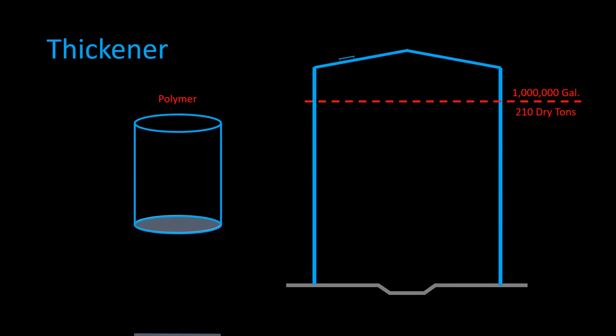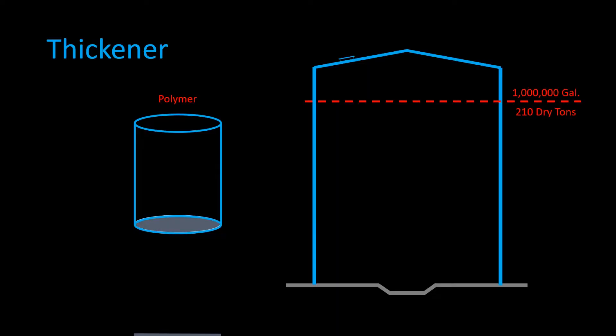To see this problem visually, let's say we are using a thickener to fill up a digester that has a capacity of 1 million gallons. One million gallons at just over 5% solids is about 210 tons of dry solids. So let's use our traditional method to calculate how much polymer this would take. The answer should be pretty simple: 210 tons of solids at 10 pounds per dry ton is 2,100 pounds of polymer. Easy peasy.